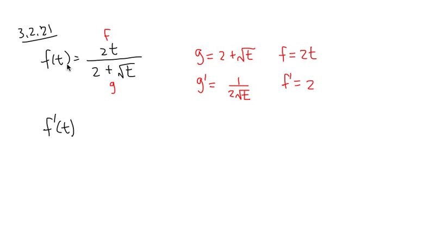So the derivative of f of t, our original function. You start with a fraction, you're going to end with a fraction. Before I forget, let me square the denominator first. So on the top, it's going to look like this times that. I'm going to break this down as 2 plus square root of t parentheses times 2.